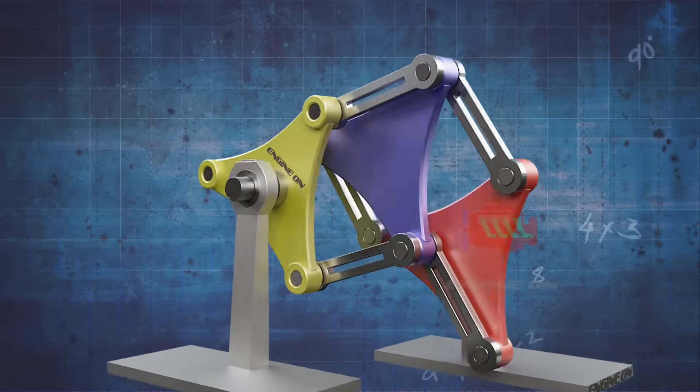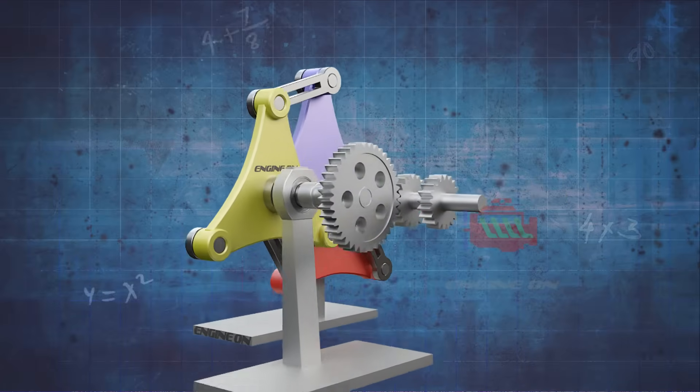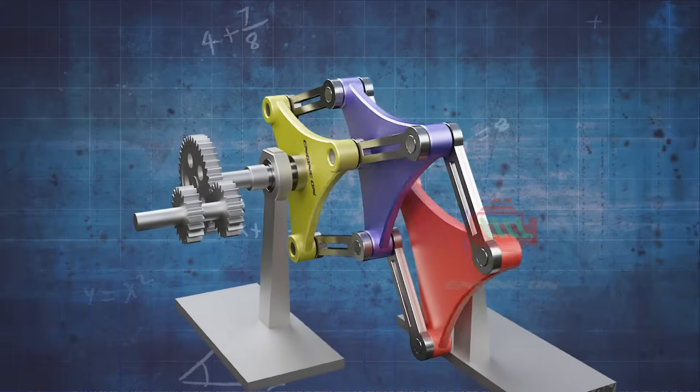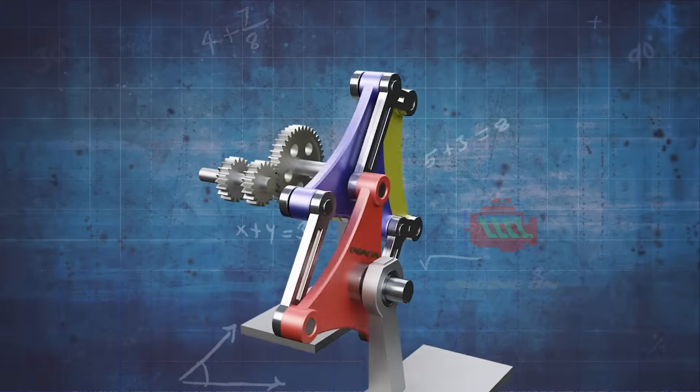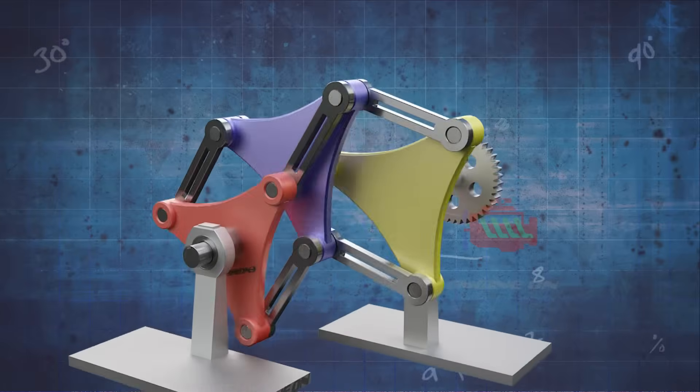All three discs of a Schmidt coupling rotate with equal velocity, the bearing-mounted connections of links to discs. It's a specific type of coupling, designed to be highly efficient and to handle misalignment between the shafts it connects.